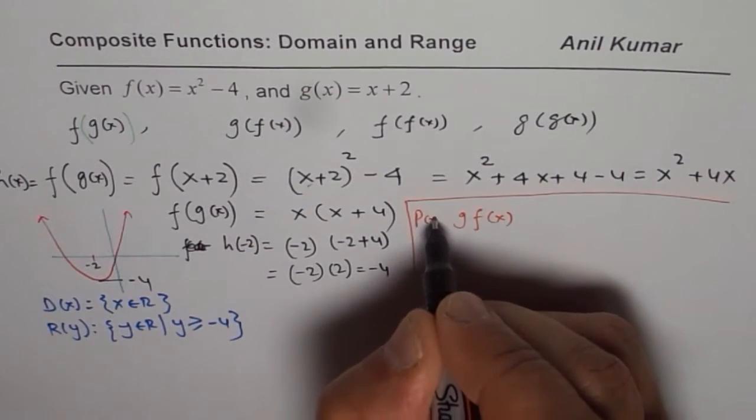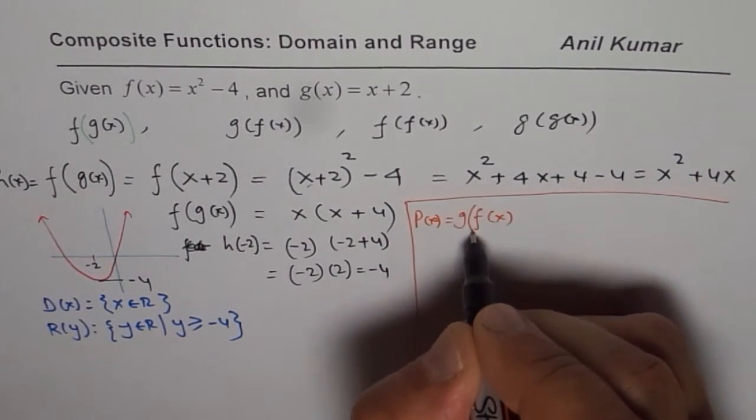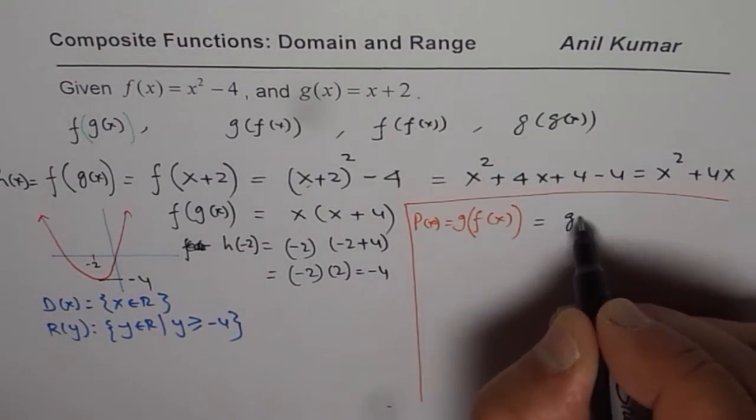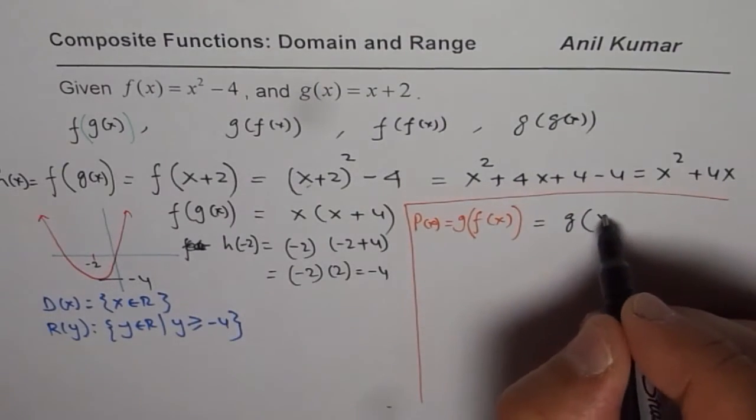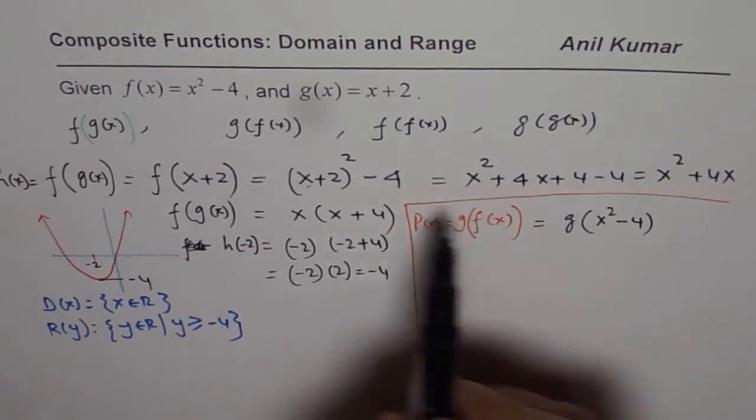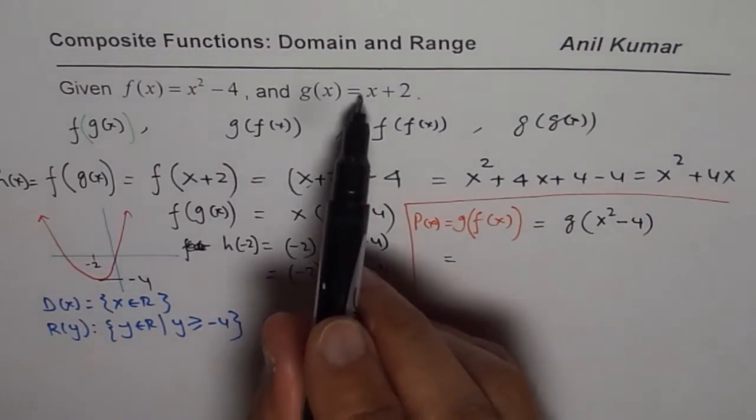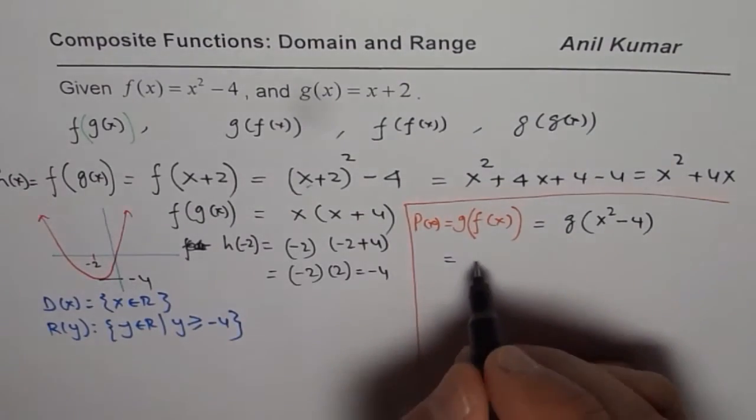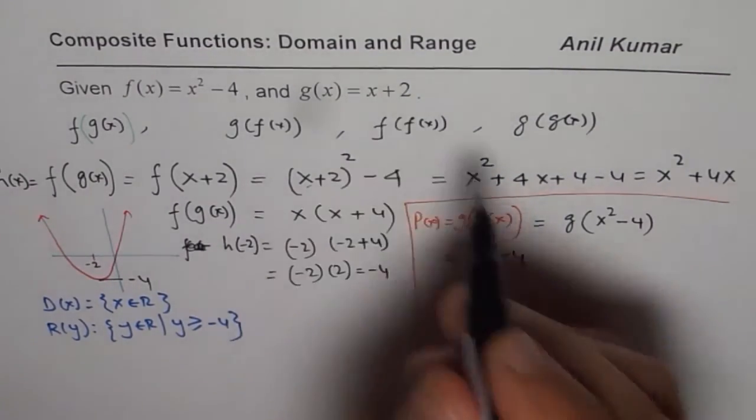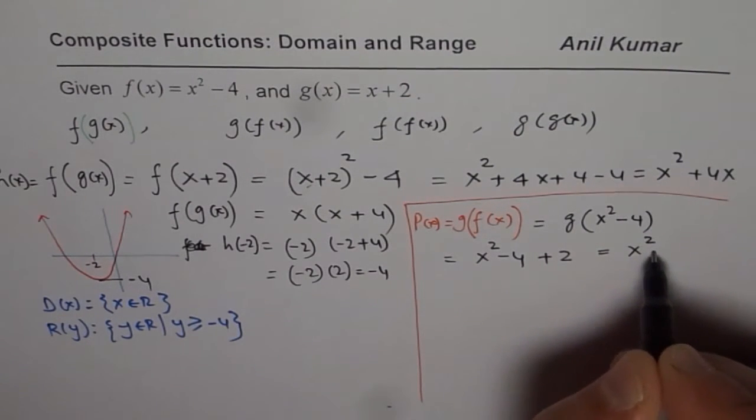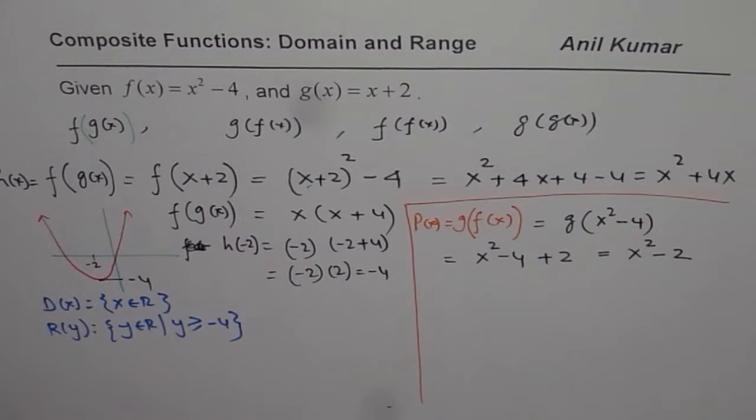Let me call this p of x equals to g of f of x. Just as we did earlier we could write this function as g of f of x where f of x is x squared minus 4. The idea is to replace x with x squared minus 4 in g of x. So it is x plus 2. Instead of x we will write x squared minus 4 and then plus 2. That gives us x squared minus 2 as our function.